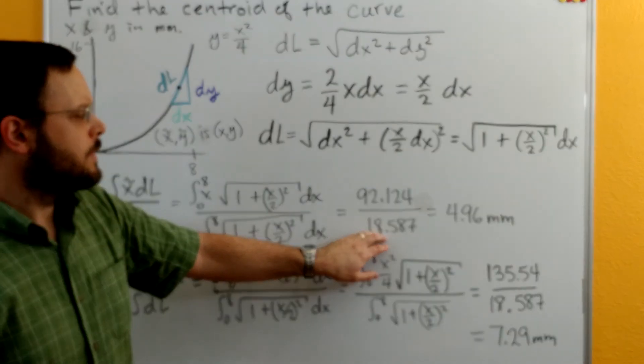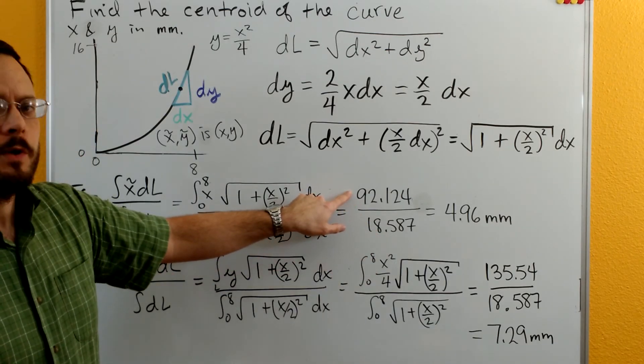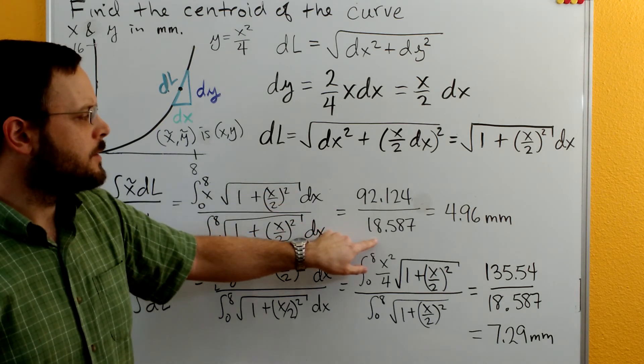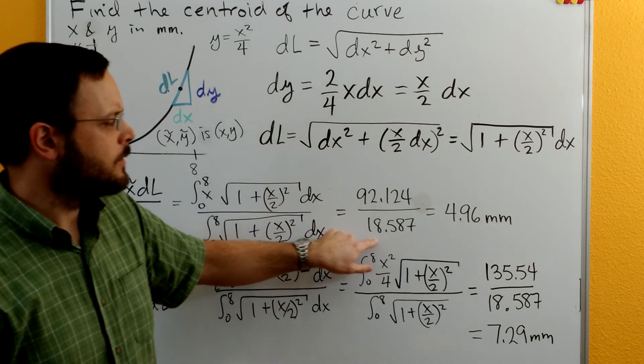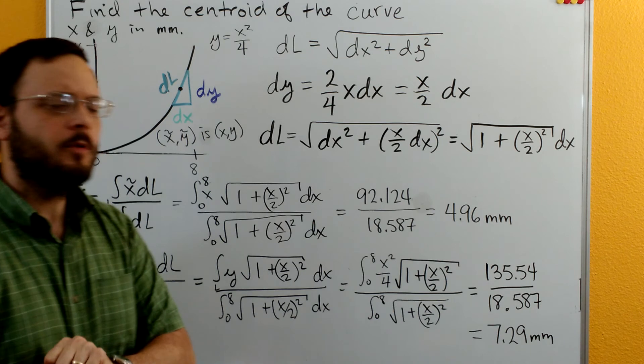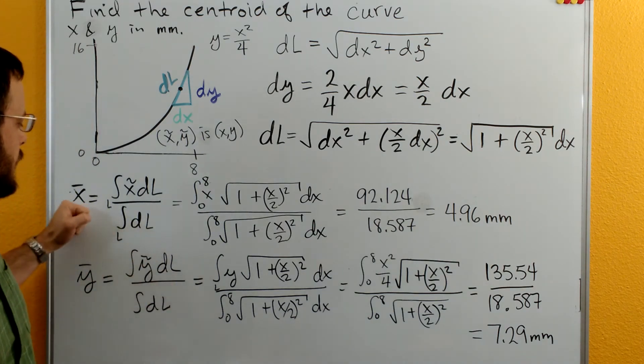Doing the numerical integration gives us 92.124 for this top integral, gives us 18.587 for the bottom integral. Dividing through we get 4.96 millimeters for the x centroid.